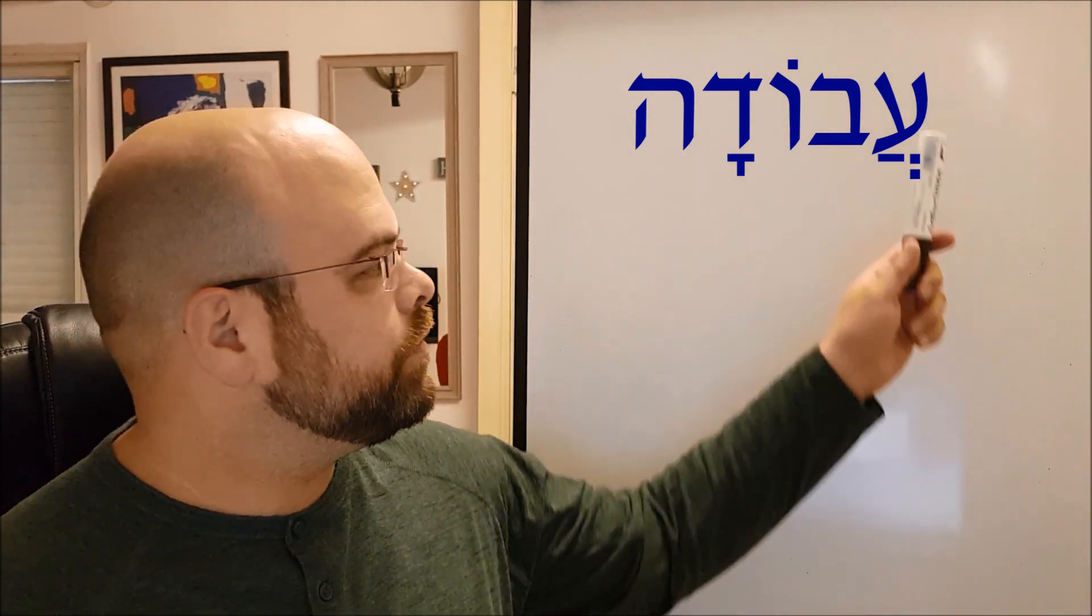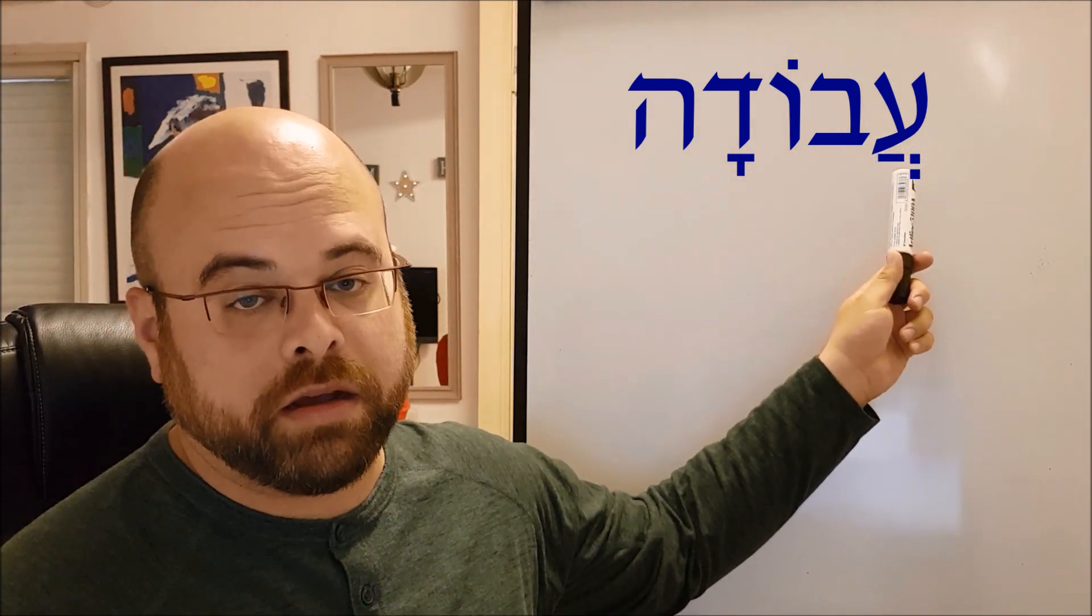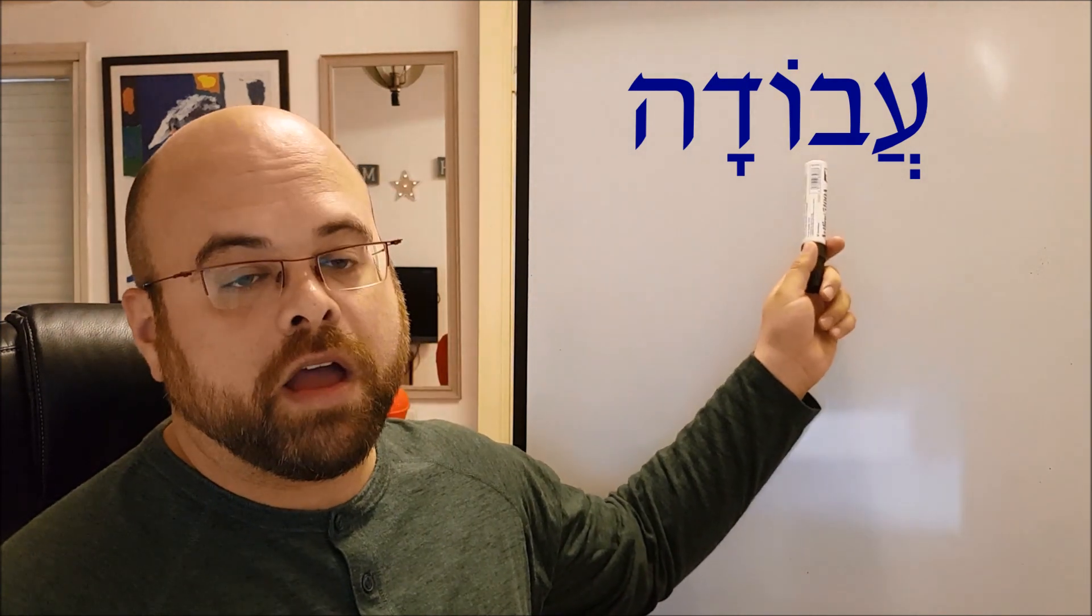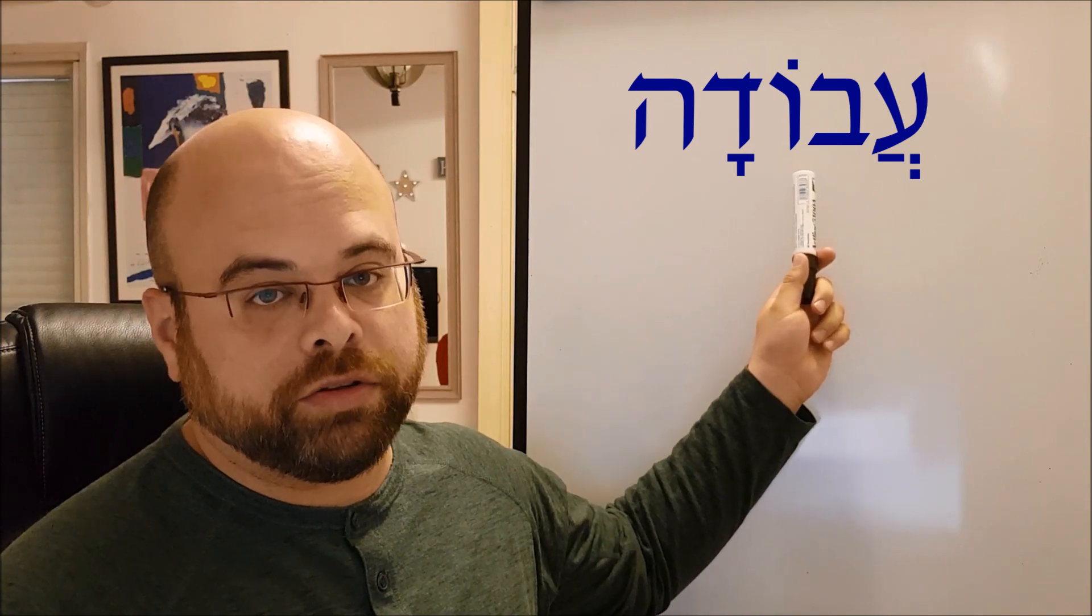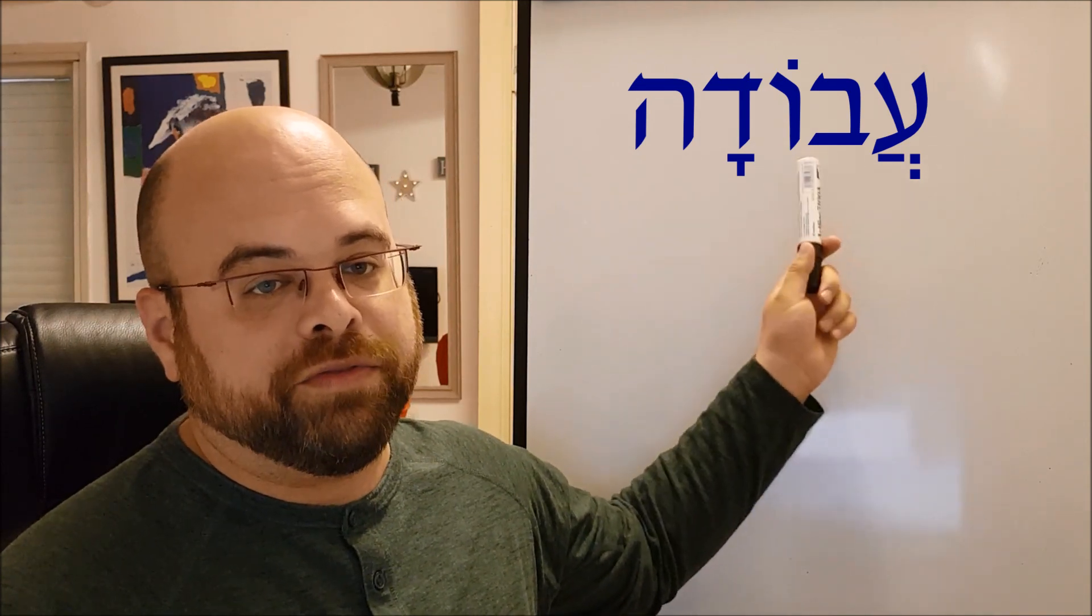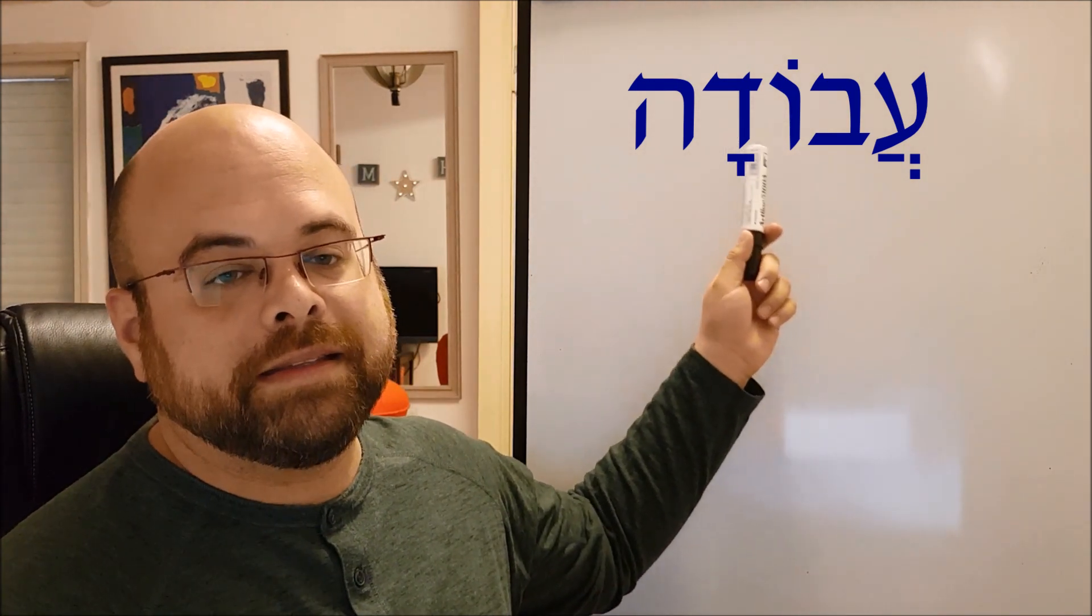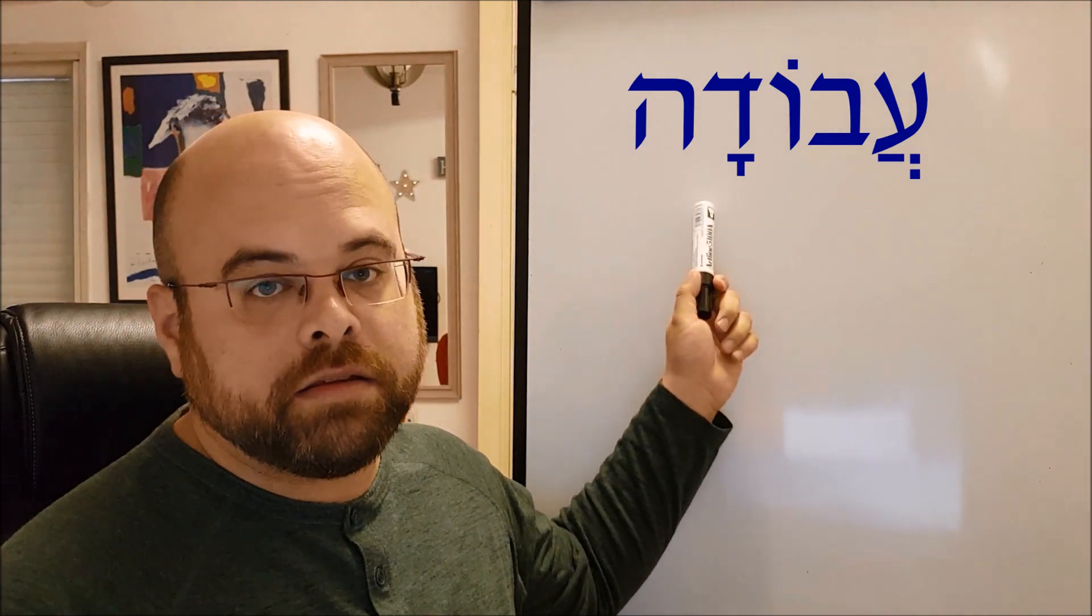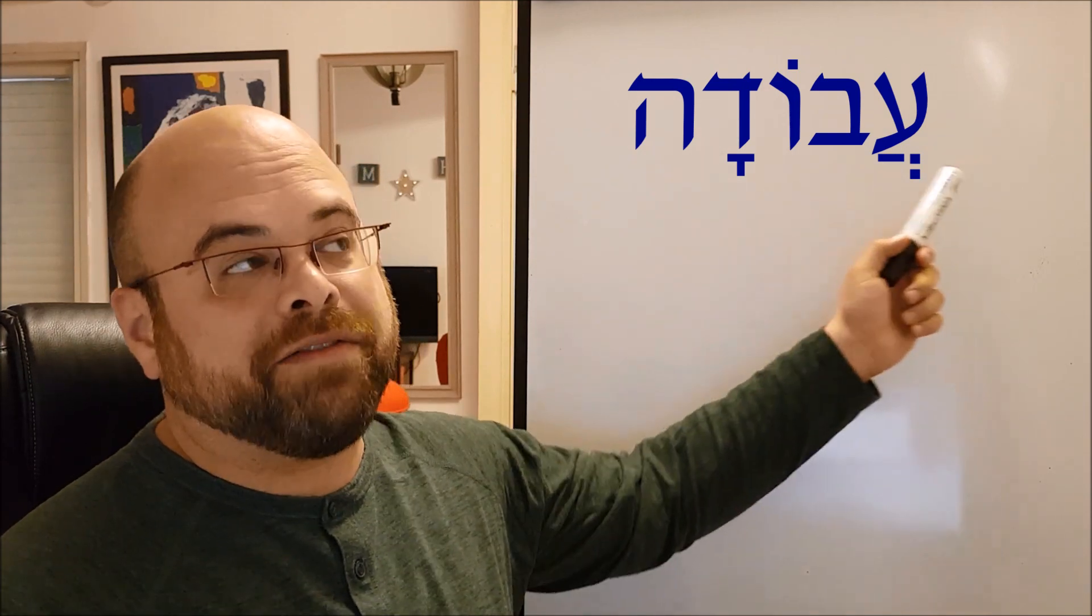AIN with the chataf patach is A, and then we have the letter BET without the Degesh which is V, and then the vowel is O because it's VAV with a dot above it, so AVO. And then we have the DALED with the KAMATS so it's DA—A-VO-DA—and the final letter is HE without NIKUD so it's just mute, so AVODAH.